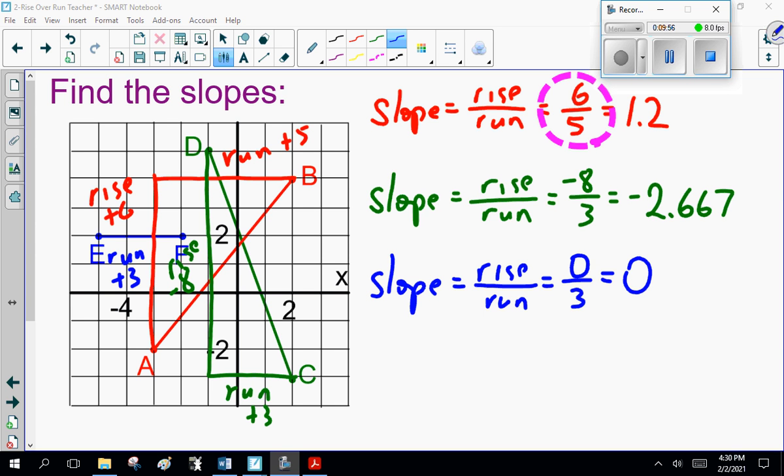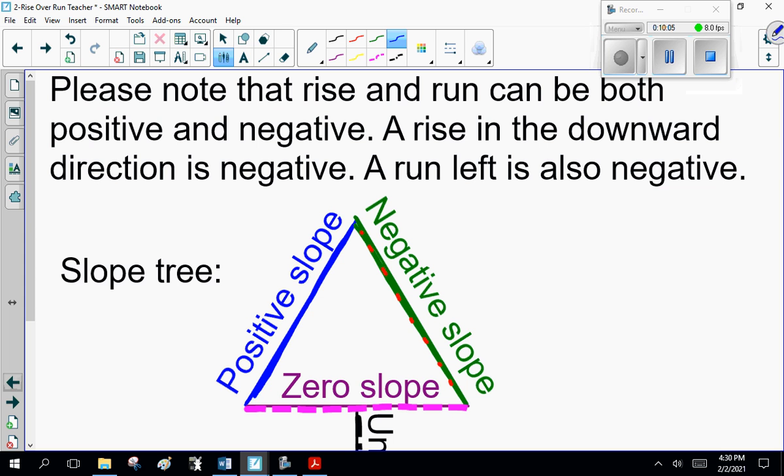And finally, EF, the sneaky one. Note the rise is 0. Flat as a pancake, and it runs 3. 0 divided by 3 is 0. This is one of those zero slope modes.